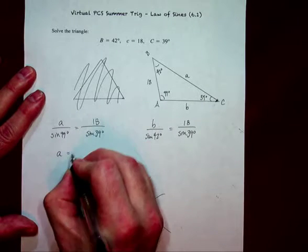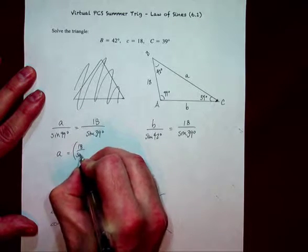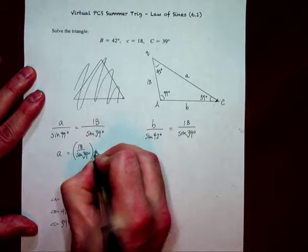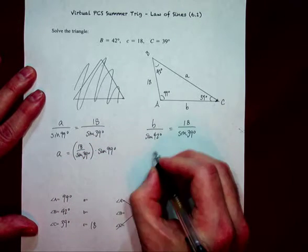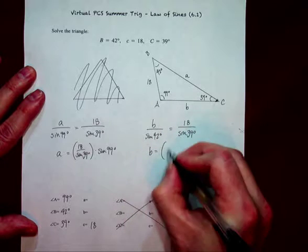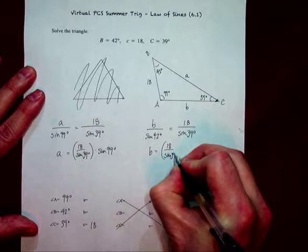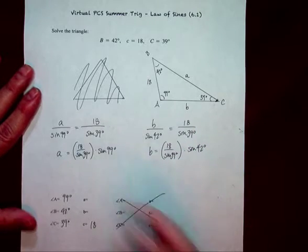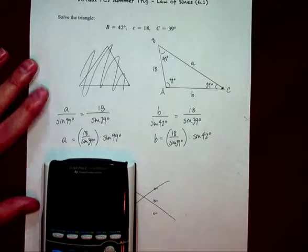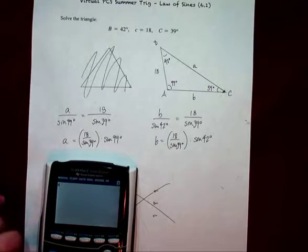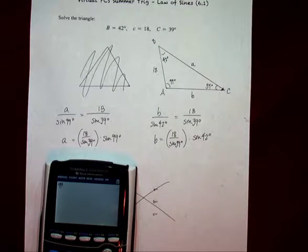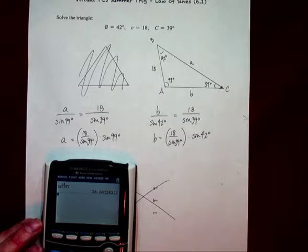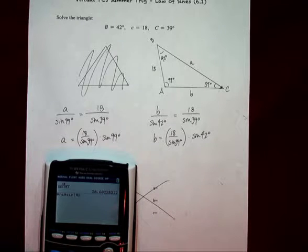And then basically, I need to say, A is equal to 18 over sine 39 degrees times sine of 99 degrees. And B is equal to that same ratio. And if I want to make it easier on myself, it's not too much easier. But I can go ahead and find that 18 over sine 39 in my calculator, and use just basically use that ratio in both of these calculations.